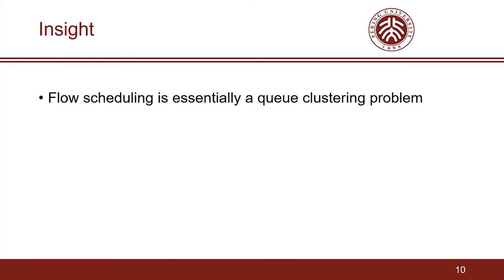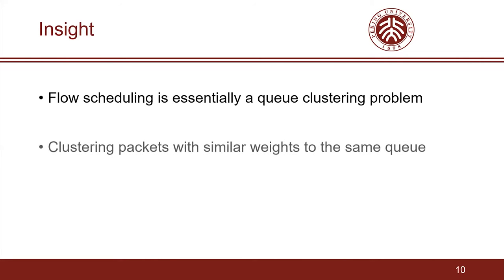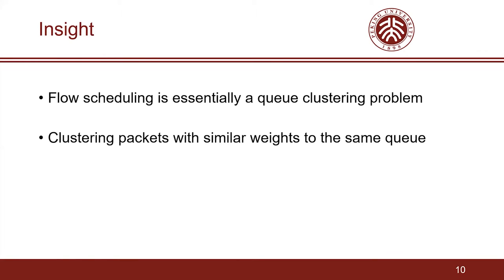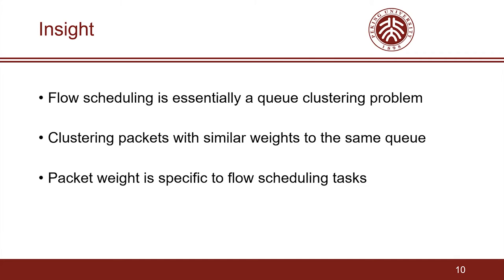Our insight is that flow scheduling is essentially a queue clustering problem. That is to say, we need to cluster packets with similar weights to the same queue to make use of priority queues for flow scheduling. For example, for SRPT, we should send the packet with the smallest remaining flow size to the queue with the highest priority, and the packet with the largest remaining flow size to the queue with the lowest priority. Obviously, the more queues, the better the scheduling. Note that the packet weight is specific to the flow scheduling task: for SRPT, the weight is the remaining flow size; for LAS, the weight is the number of bytes already sent by the flow.